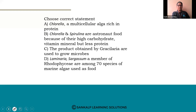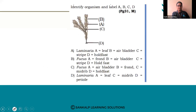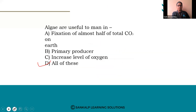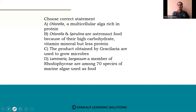Next question — choose the correct statement. Option A: Chlorella is a multicellular alga rich in protein. Option B: Chlorella and Spirulina are astronaut food because of their high carbohydrate, vitamin, mineral, but less protein. Option C: The product obtained by Gracilaria is used to grow microbes. Option D: Laminaria and Sargassum, members of Rhodophyceae, are among 70 species of marine algae used as food.